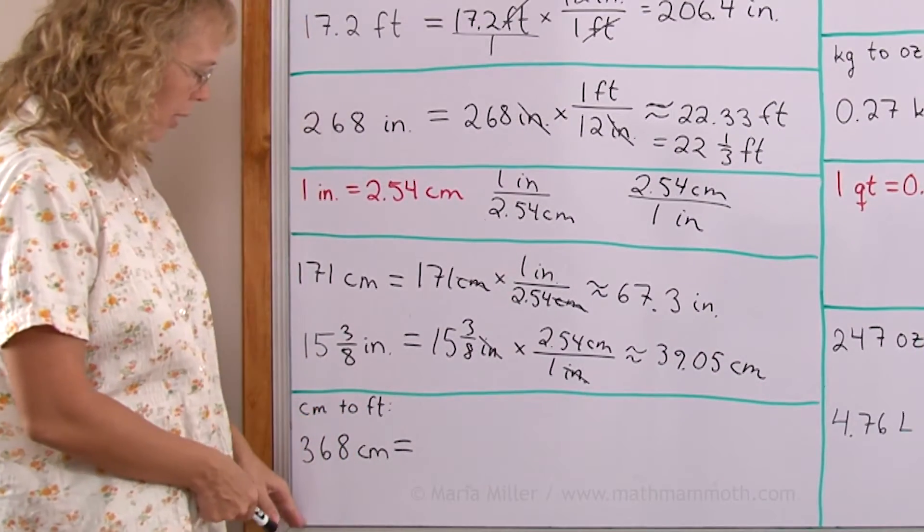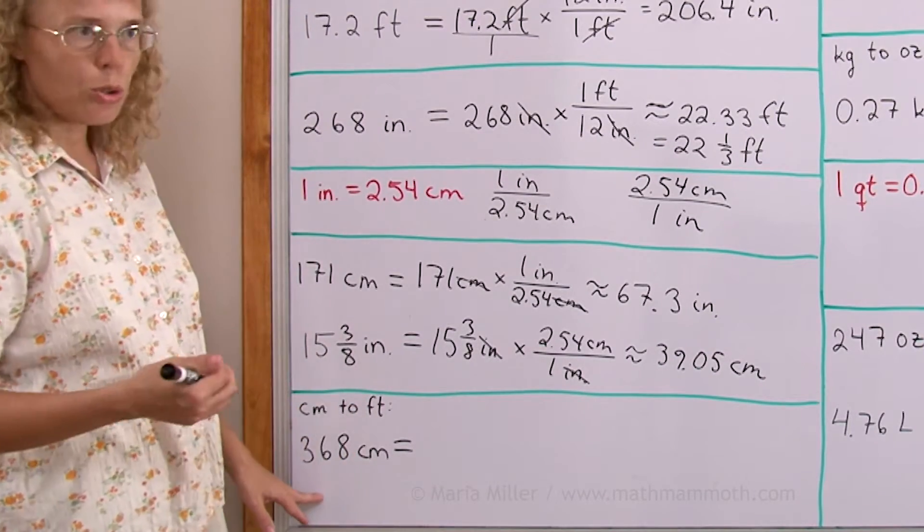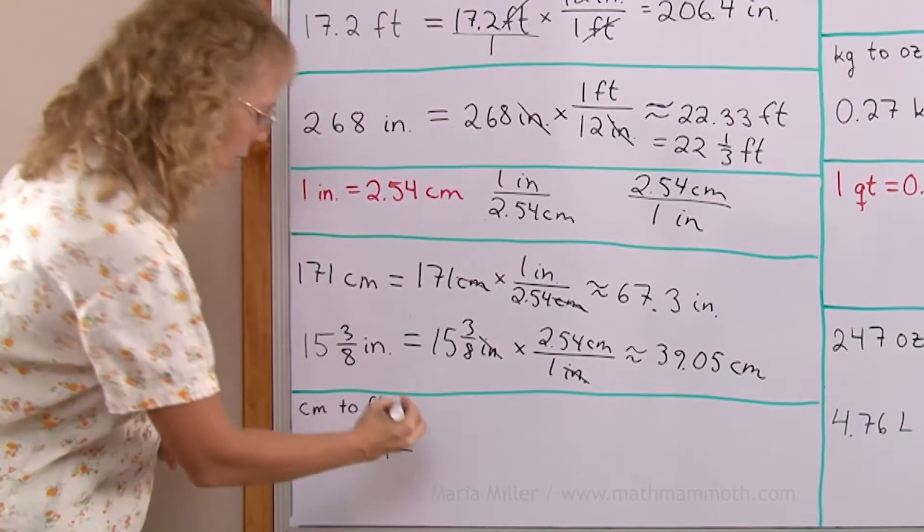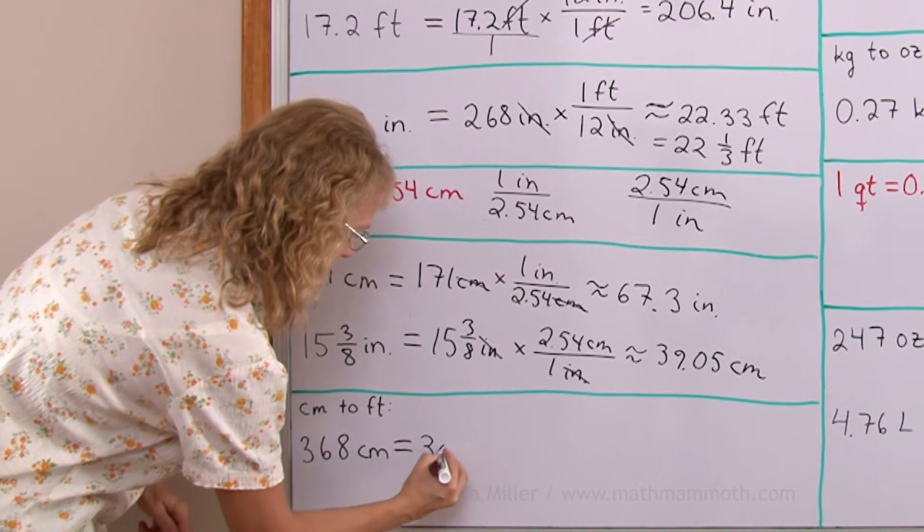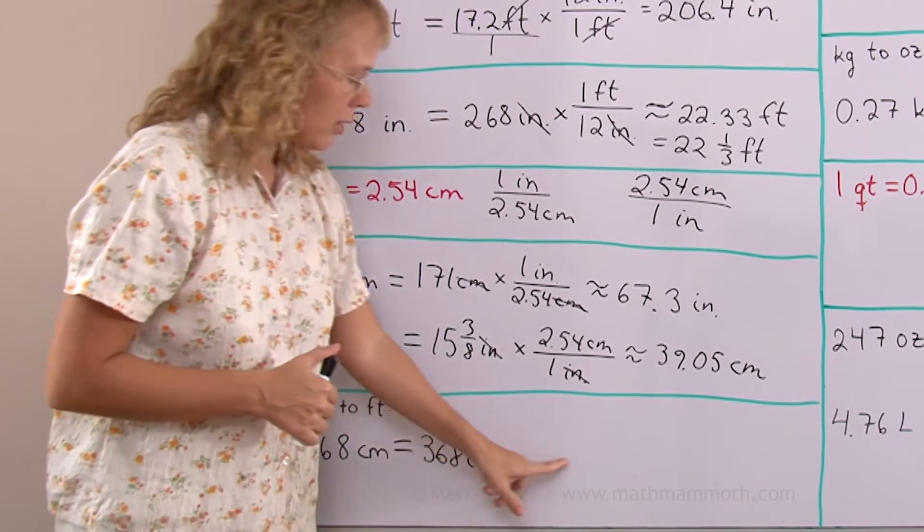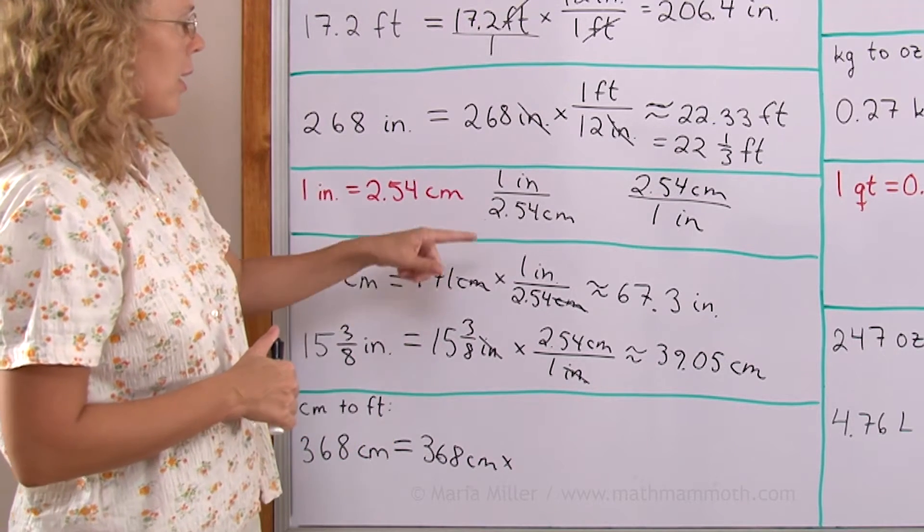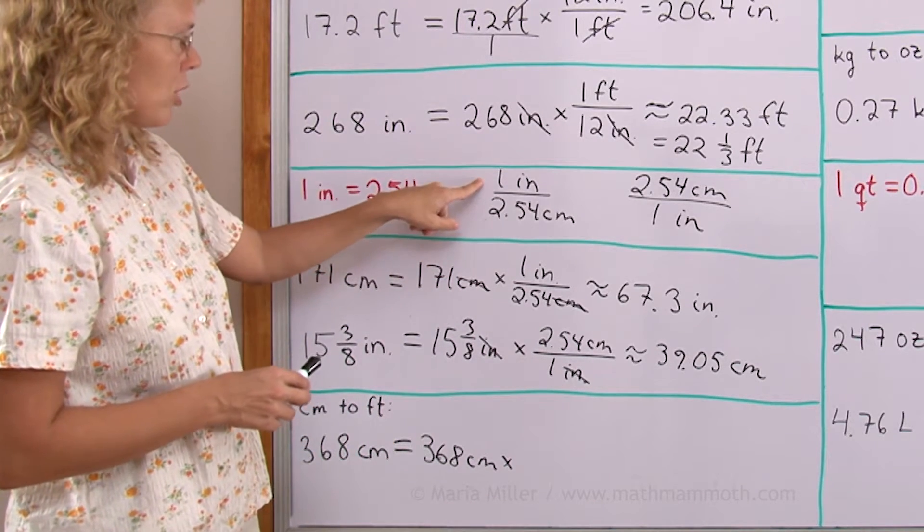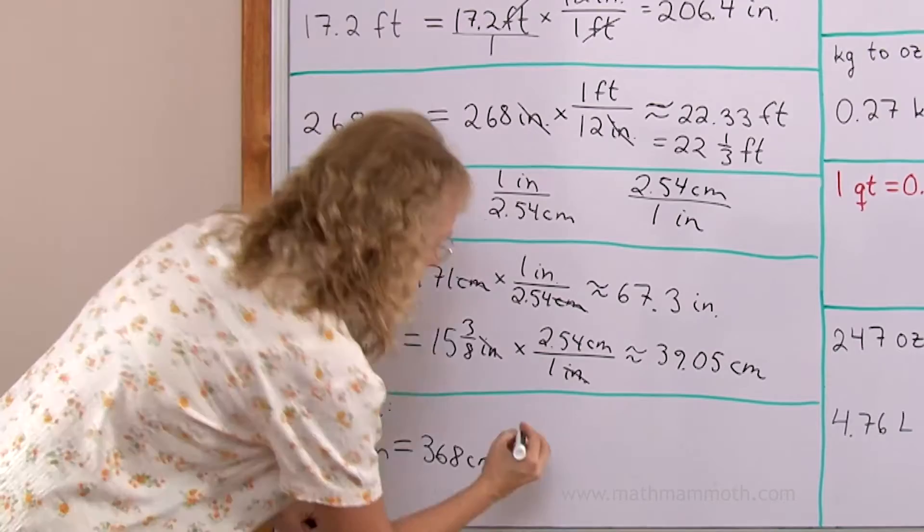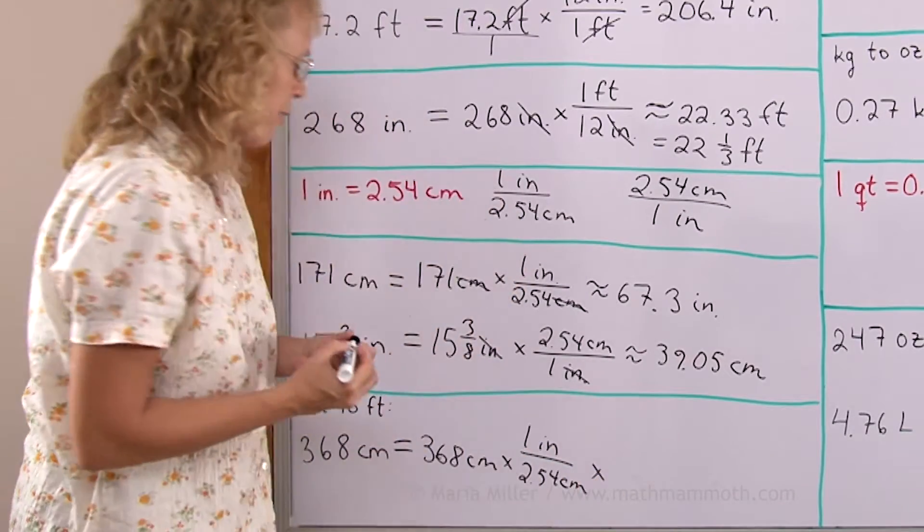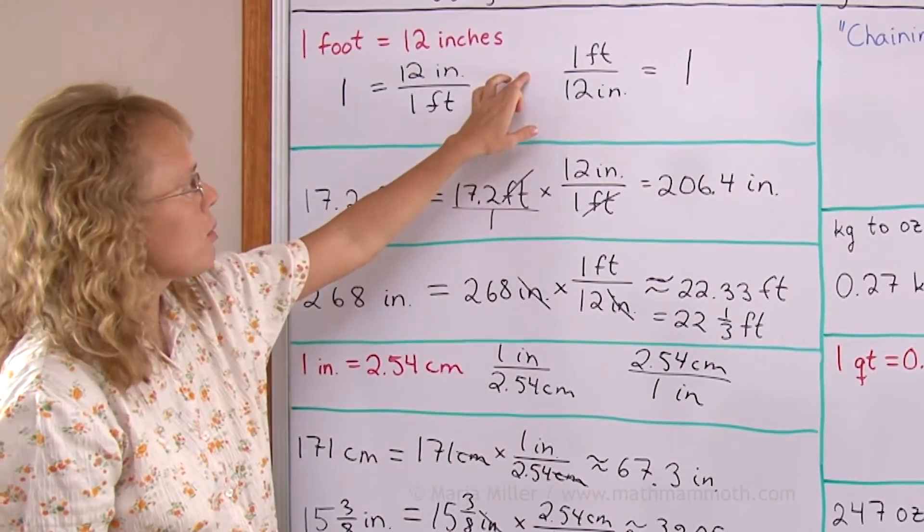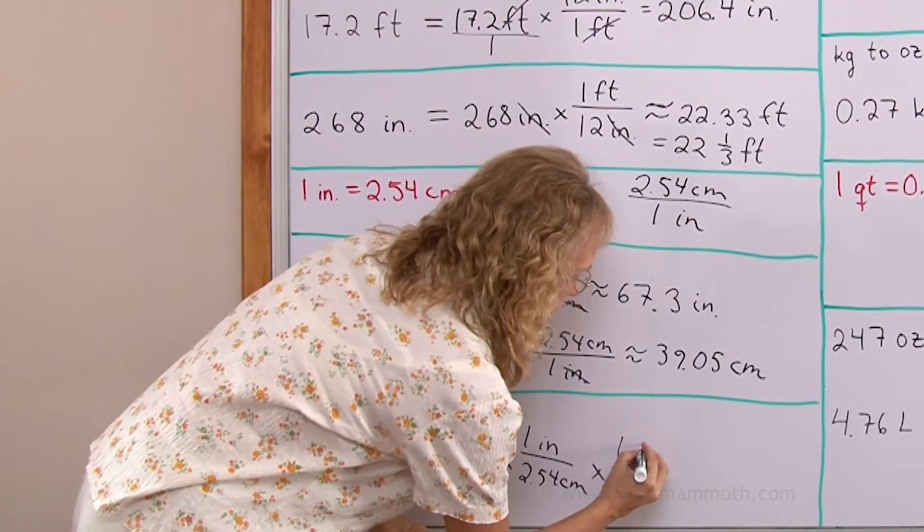Now let's go back to this example here. Centimeters to feet. Again, I'm going to use two. I'm going to chain these two conversion ratios here. I'm going to change this to feet. 368 centimeters times some kind of conversion factor where we go centimeters in the denominator. I had it here. I will change it to inches first. So I'll use this ratio here first, which has inches and centimeters. Then I'll use another conversion ratio which will have inches and feet. This one here. So the inches are in the denominator because I want to cancel them out.